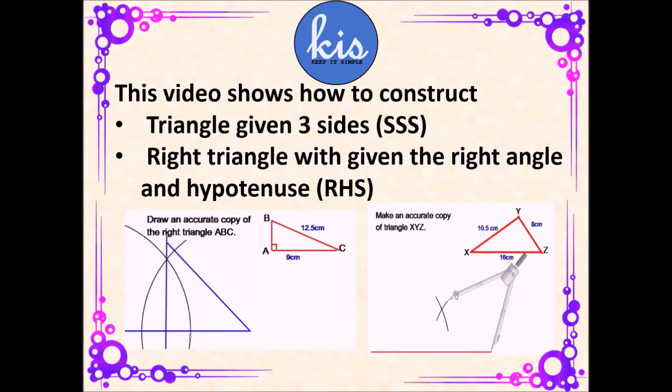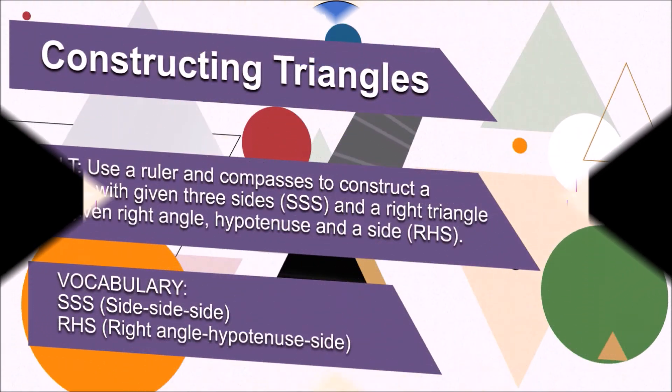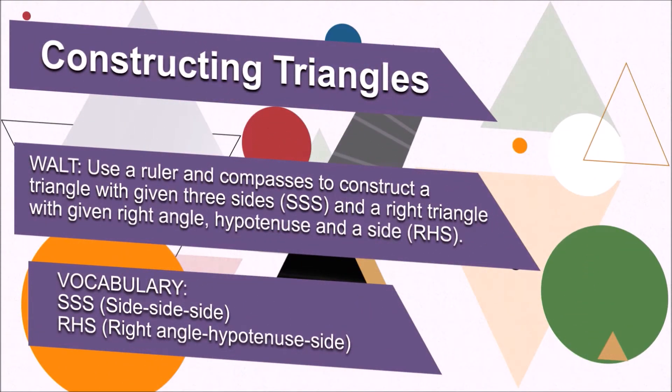Good morning students, welcome to our lesson for today. In this lesson we will construct triangles using compasses and straight edge. There will be two types: SSS when the three sides are given, and RHS when the hypotenuse and a side of a right angle is given.